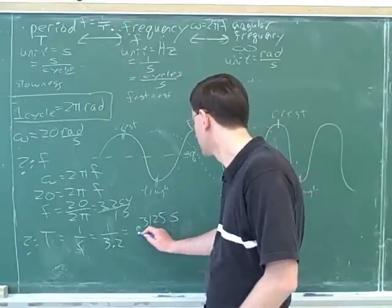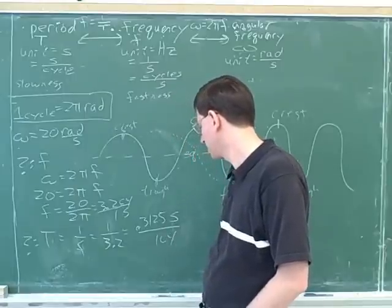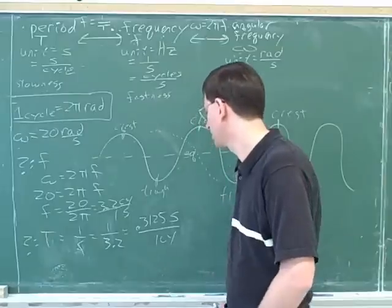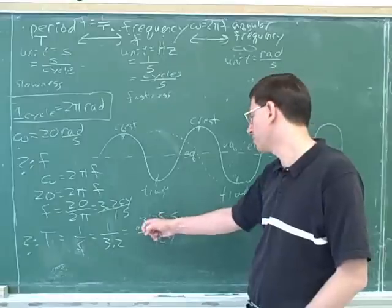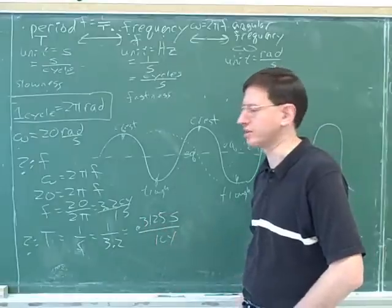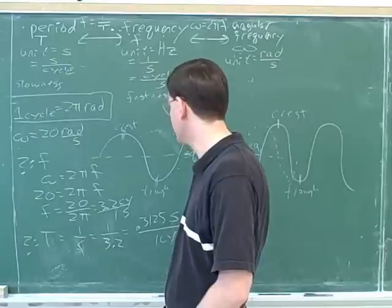Seconds for one cycle. How would we interpret this? It takes 0.3125 seconds for one complete cycle. Yeah, here we use the word takes. It takes about 0.3 seconds to go through a cycle. And you can kind of leave the units out here if you want, because we know it will come out in standard units.